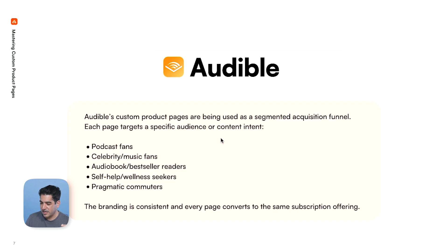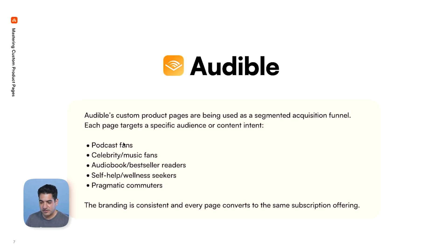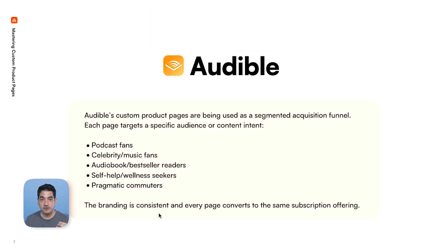We built an AI agent that goes and does exactly what I just did — it analyzes every single screenshot in every single custom product page and thinks about how they all combine together. What is the strategy of Audible when it comes to custom product pages? The AI told me that Audible's custom product pages are being used as a segmented acquisition funnel. Each page targets a specific audience or content intent: podcast fans, celebrities, audiobooks, bestsellers, self-help, pragmatic commuters, fantasy, romance, action and thriller. The branding is consistent — that's an interesting part I might not have noticed on my own. And they all lead to the same subscription offering. They're not segmenting their pricing; they're segmenting how they get you to the pricing, which is really cool.